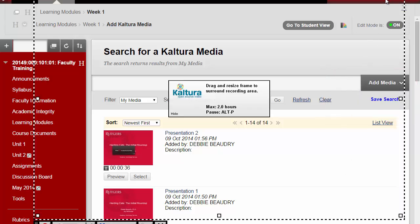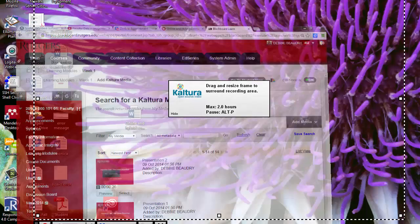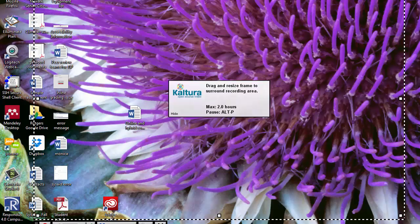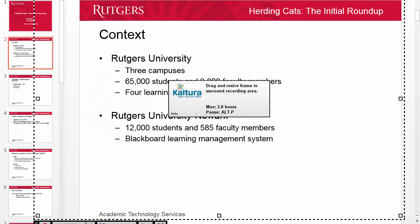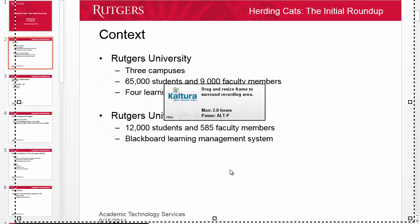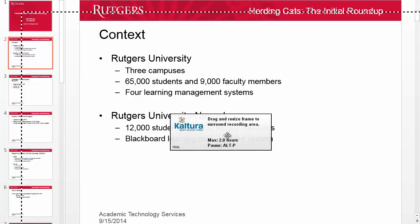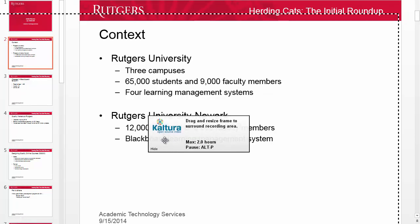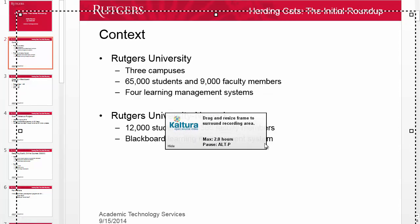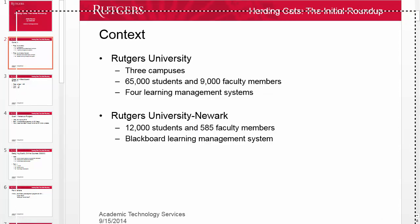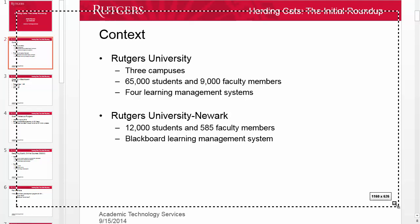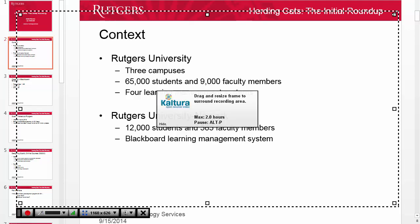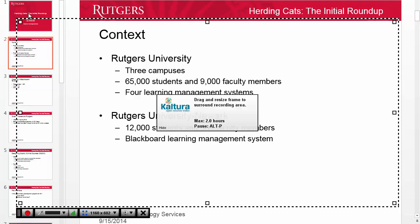Then go back to your presentation in PowerPoint. Anything within the frame of the dotted lines will be recorded. You can move this frame by positioning your pointer in the middle of the window and dragging. You can resize the recording area by dragging on the small boxes on the side of the frame.